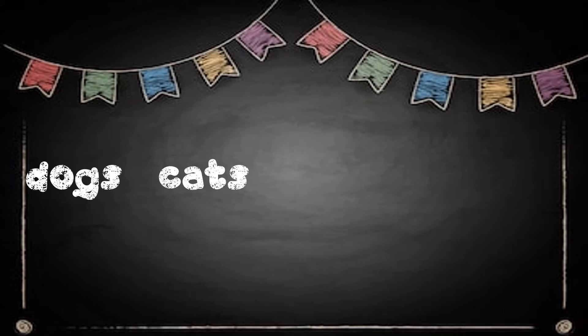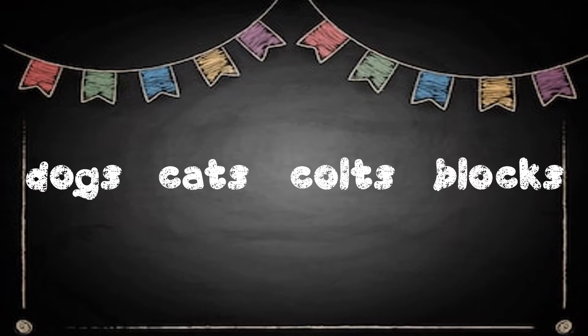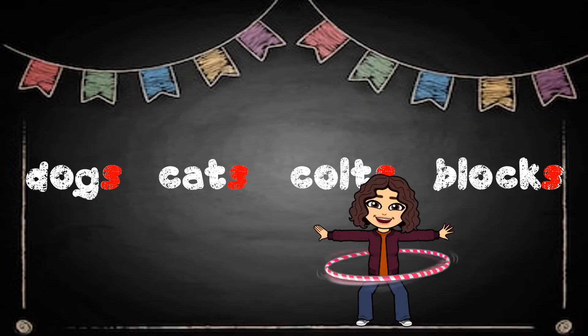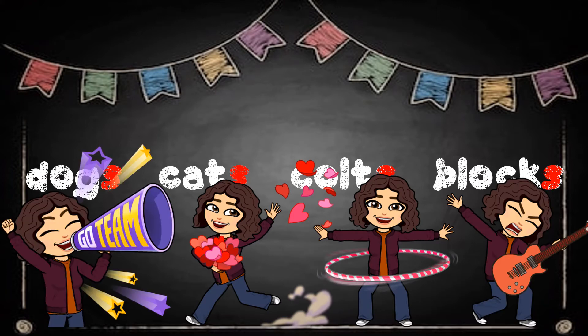Dogs, cats, colts, blocks. What do these words have in common? They all end with the letter S. What does the S mean when it is added to a word? It means that there's more than one.